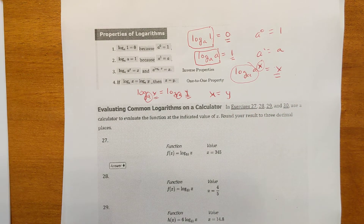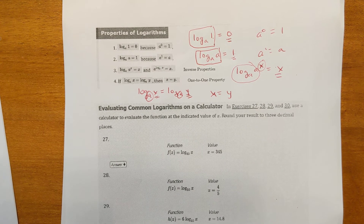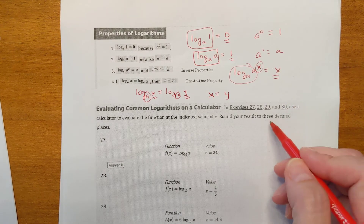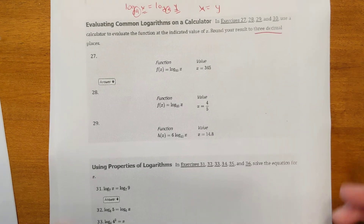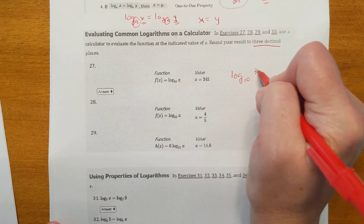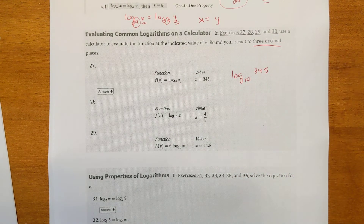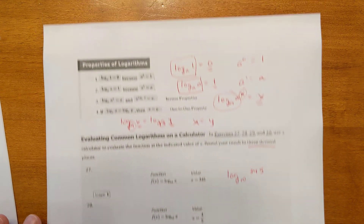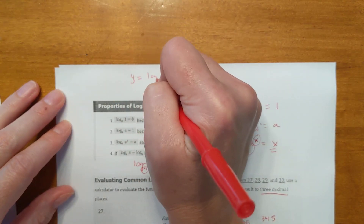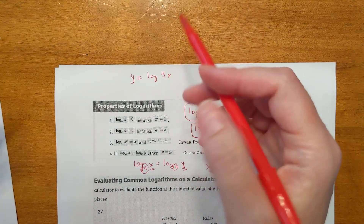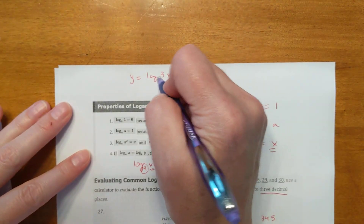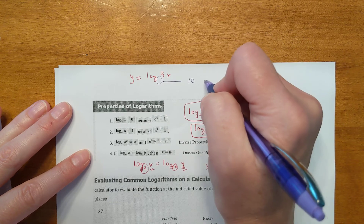Now use a calculator to evaluate. Round to three decimal places. First: log base 10 of 345. A note — if no base is written, the base is assumed to be 10, so it's just the log button. Log of 345 equals 2.538. Also, log base e of x is written as the natural log of x; it follows all the same rules but uses base e.